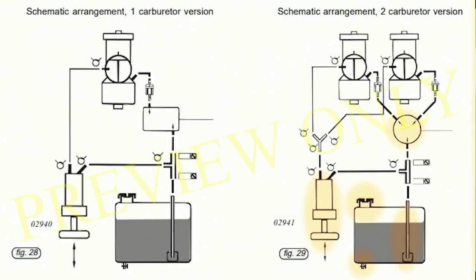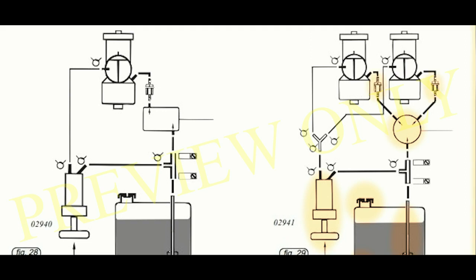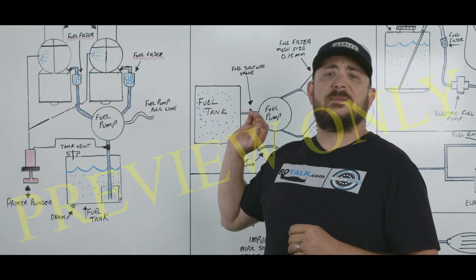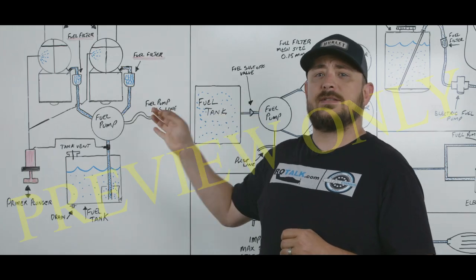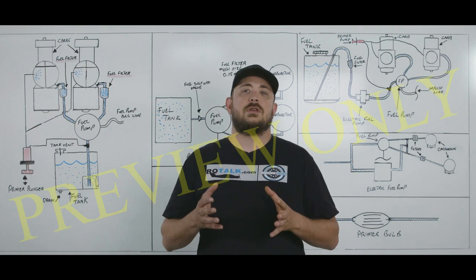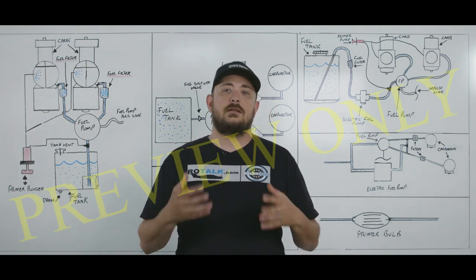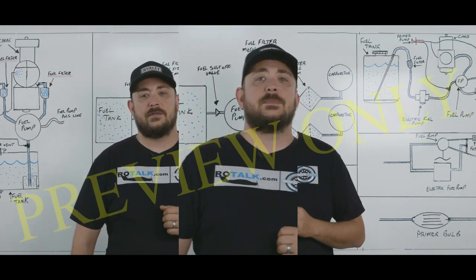This shows an impulse fuel pump that is actuated by crankcase pressure pulses and a fuel filter before the carburetors. What this fuel system diagram doesn't show is that if the pressure drop across the filter becomes too great, the fuel pump can cavitate.